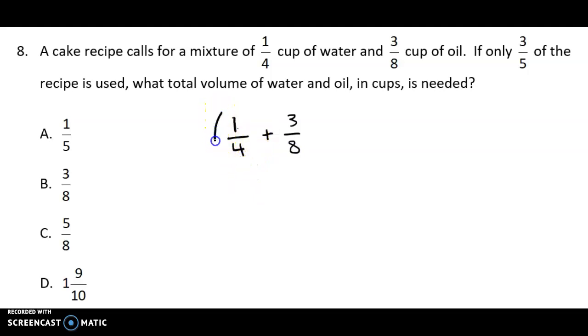Now, for the new recipe, we're only going to need three-fifths of that amount. So this becomes an order of operations problem. We'll need to do the brackets first, and then the multiplication second.